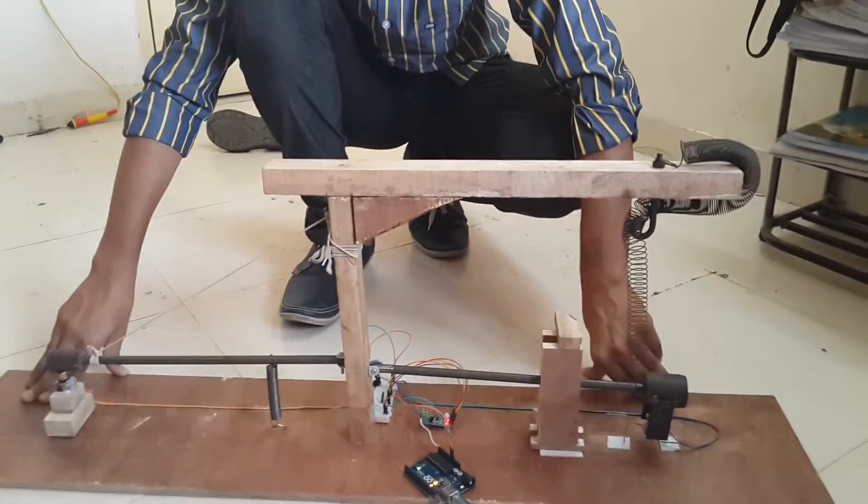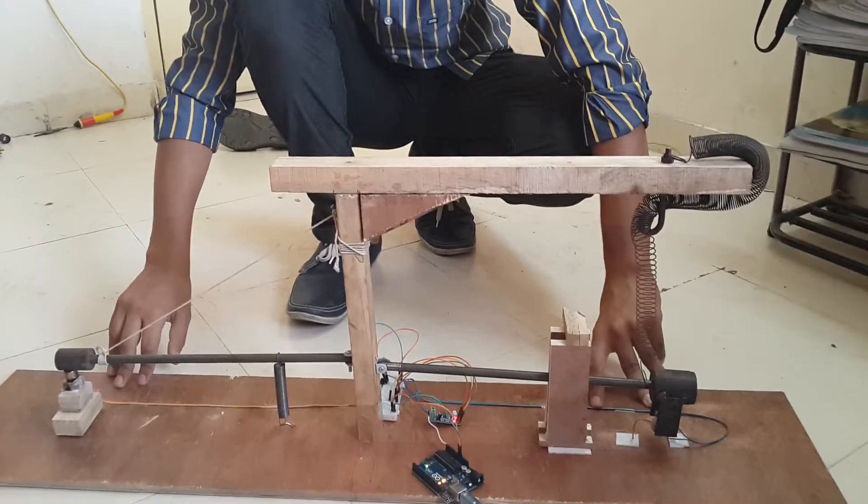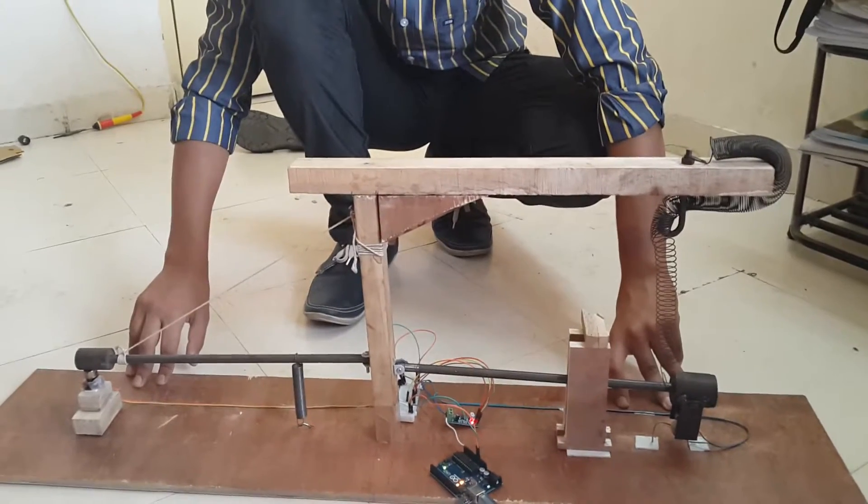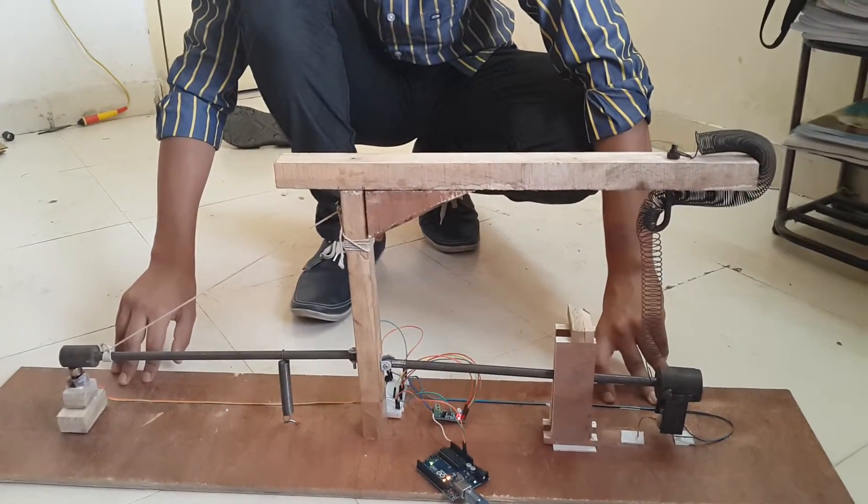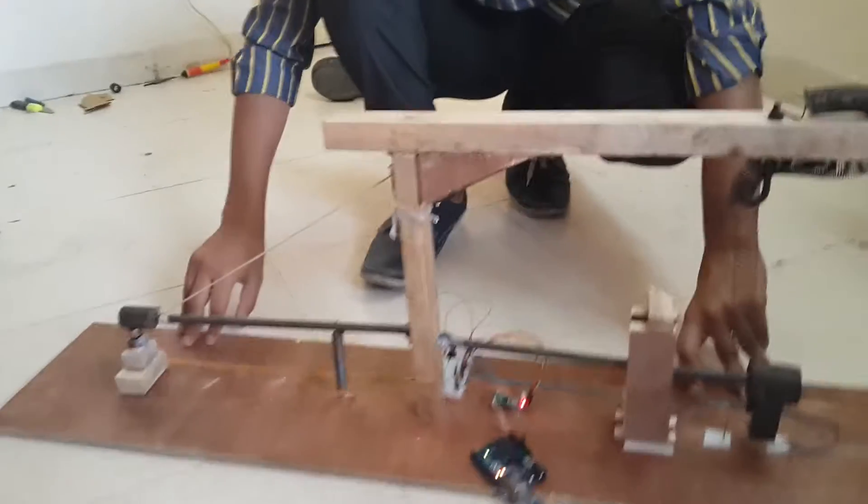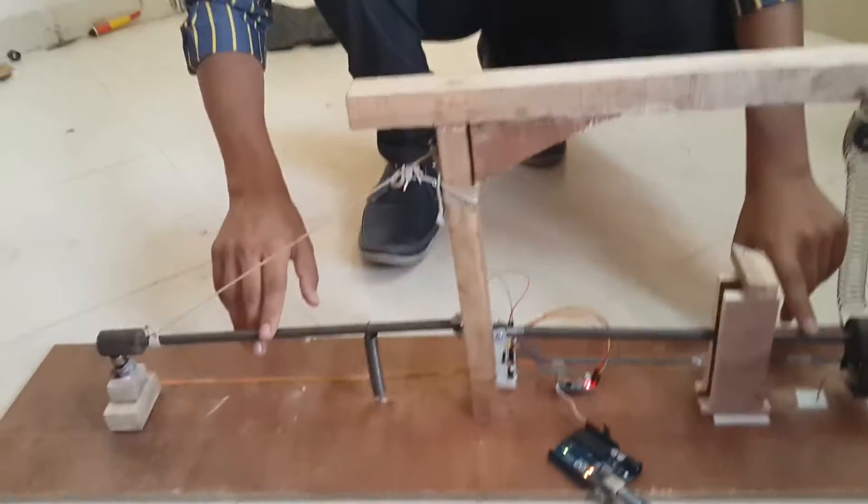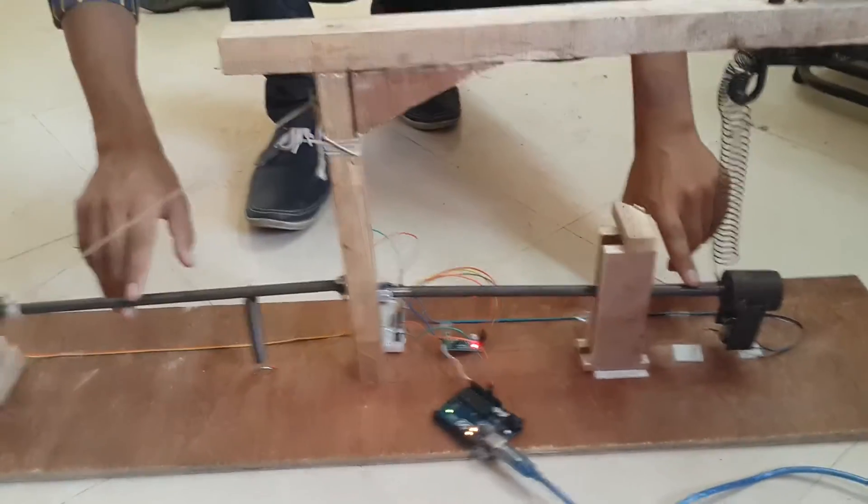So this is our seismograph that is based upon the most fundamental principle of physics, that is Faraday's law of electromagnetic induction. As you can see, there are two rods, each with a different degree of freedom. One is horizontal and the other is vertical.